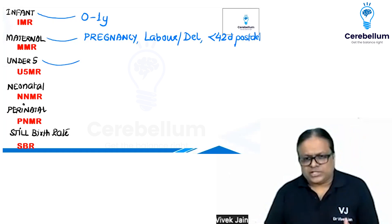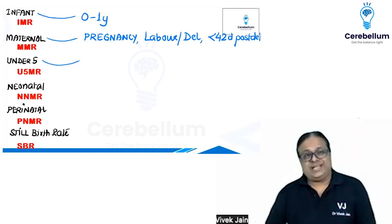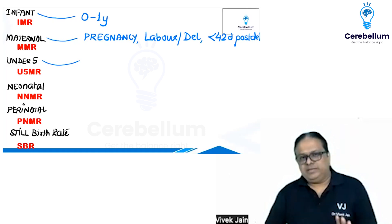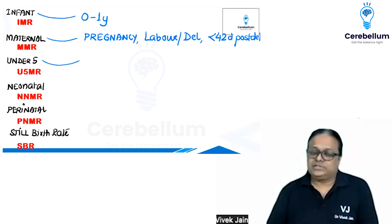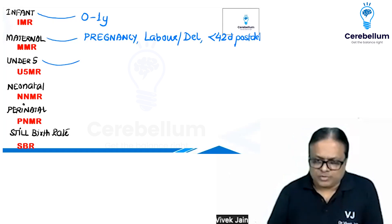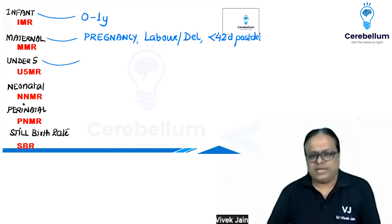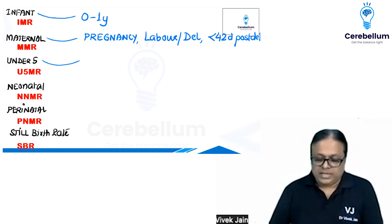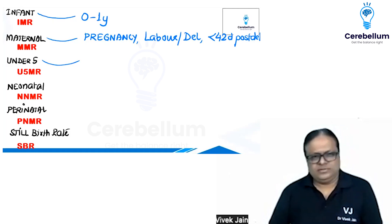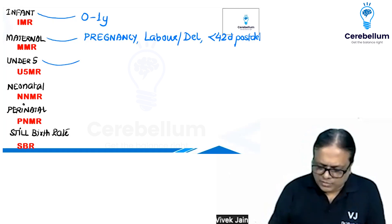You cannot exclude maternity or pregnancy, so pregnancy deaths are maternal deaths, labor and delivery deaths are maternal deaths, and deaths within 42 days of delivery are also maternal deaths. This was the exact question in your paper — the answer was all of the above are included in maternal death. Under-five means before five years are completed.